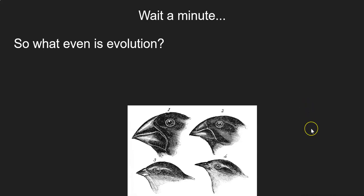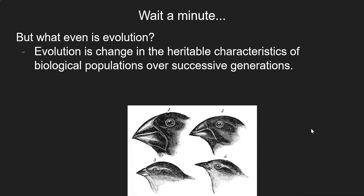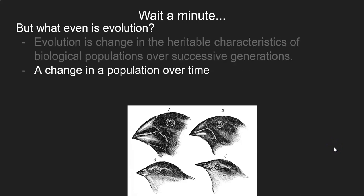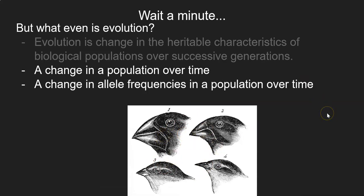Evolution is the change in heritable characteristics of biological populations over successive generations. We're going to have a whole section on it later in the semester, but you can just think about evolution as a change in a population over time, as is the case with Darwin's finches. Later on, we're going to think of evolution as a change in allele frequencies in the population over time — not important right now, but we'll circle back to this.